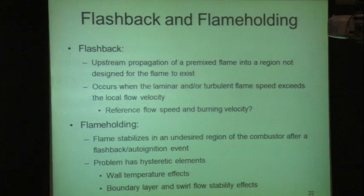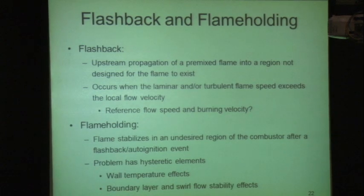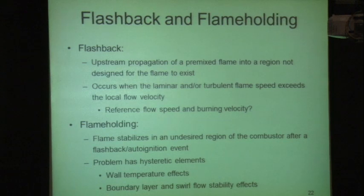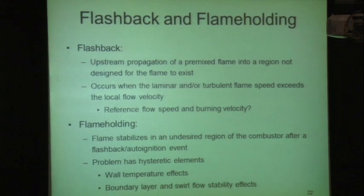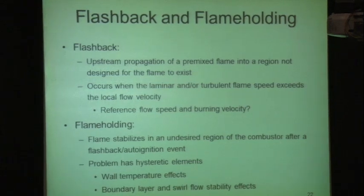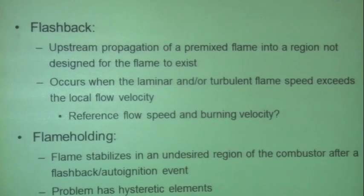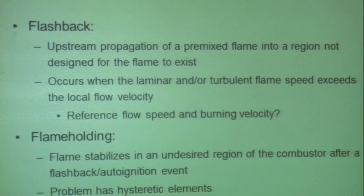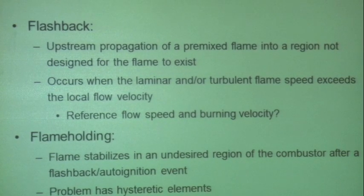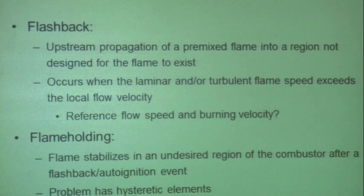If the flow velocity on average is less than the flame speed, then the problem is kind of trivial — that's why flashback is occurring. Where this gets interesting is when the flow velocity on average is greater than the flame speed, and you ask how a flame can move upstream into a faster flow. This occurs when the laminar or turbulent flame speed exceeds the local flow velocity.